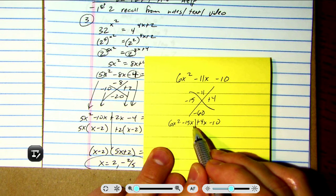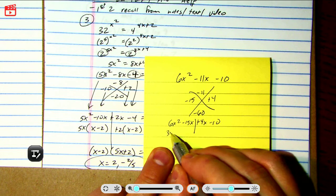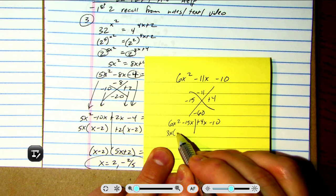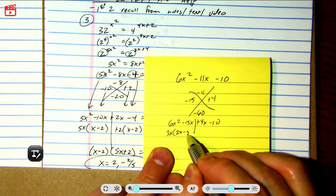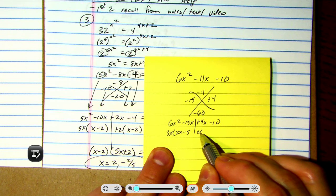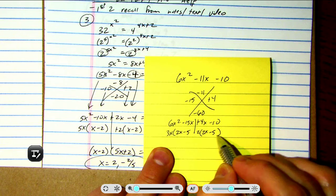Let's see, what comes out of here is a 3x I think, is a GCF. What's left over is 2x minus 5. And what's the GCF of these two? I think it's a 2. And what's left over if I factor out a 2? Well, is that the 2x minus 5? Aha, it is.